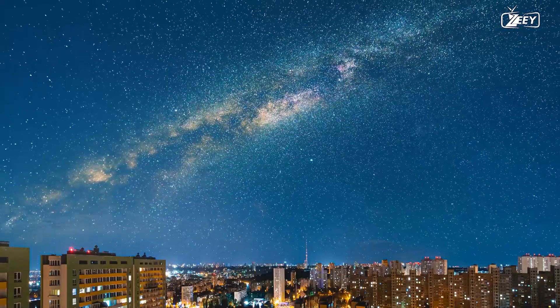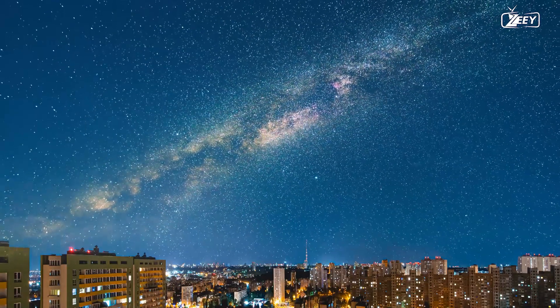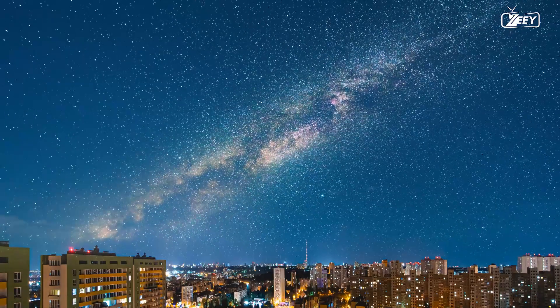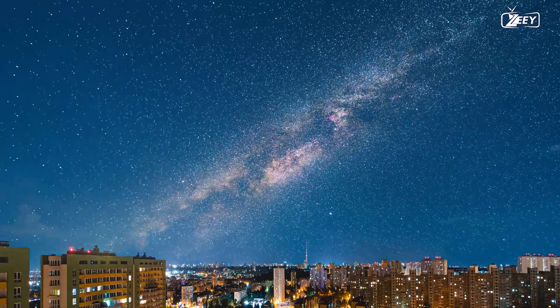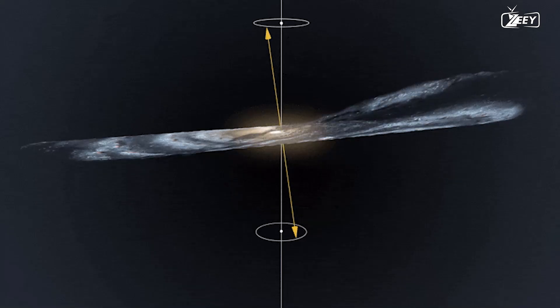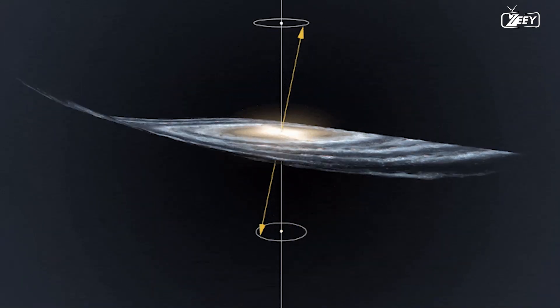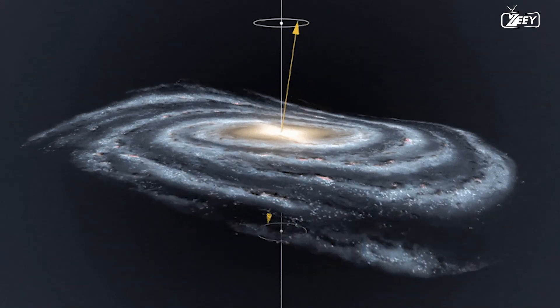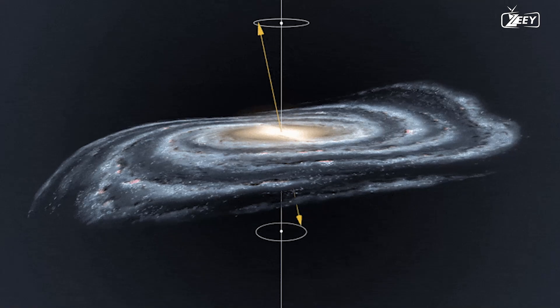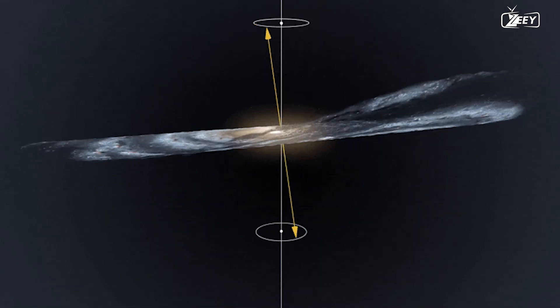Moreover, the band appears to bisect the night sky, implying that we exist within its plane, neither situated above nor beneath it. It is impracticable for us to leave this plane in order to fully comprehend the Milky Way's shape. Such a journey would necessitate traversing hundreds or possibly thousands of light-years perpendicular to this plane.